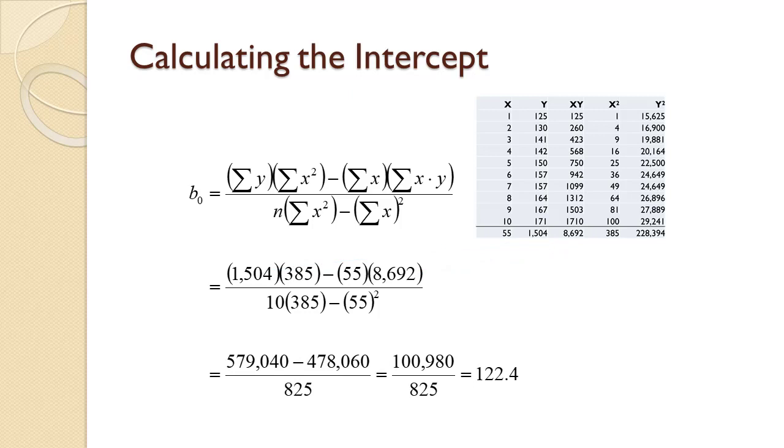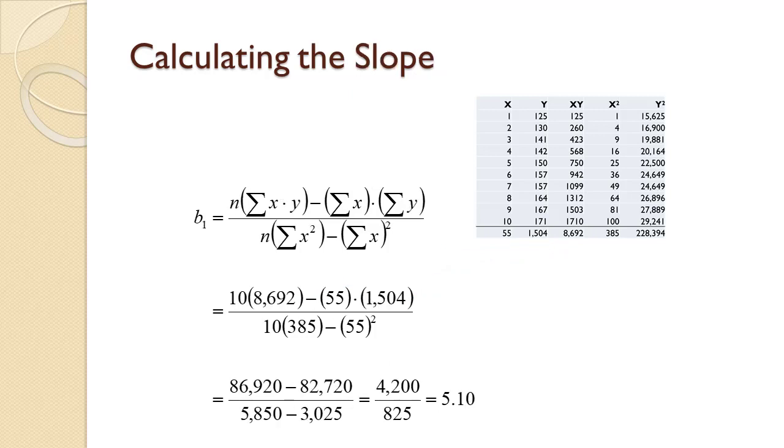Performing the calculations gives us an intercept of 122.4. Plugging in the totals and sample size of 10 into the slope formula yields a slope of 5.1.